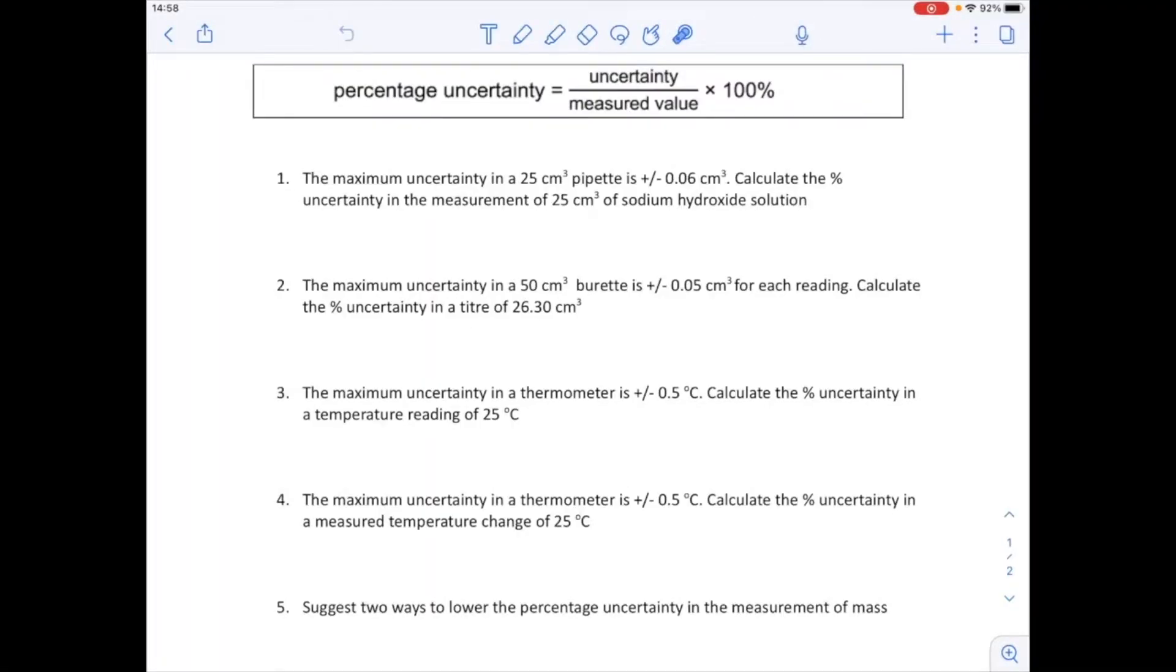So for the first one, the percentage uncertainty in the measurement of 25 cm³ of sodium hydroxide solution using this pipette is going to be: the uncertainty value is 0.06 and 25 cm³ has been measured by the pipette, so divided by 25, multiplied by 100, and that comes out at 0.24%.